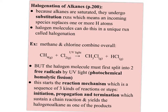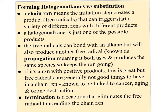Even though the overall equation looks simple — methane and chlorine combine to form a halogenyl alkane and hydrochloric acid — the process is much more complicated. A chain reaction means the initiation step creates free radicals that can trigger a variety of different reactions with different products. The one thing all these reactions have in common is they create another free radical.